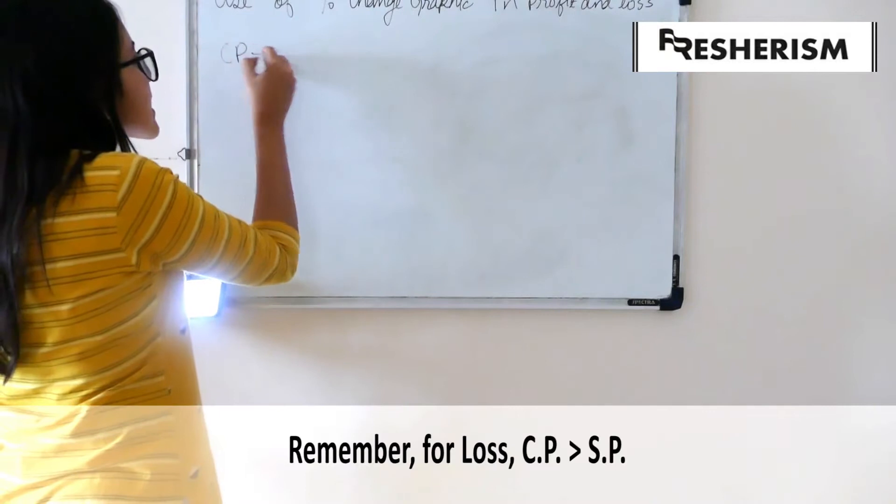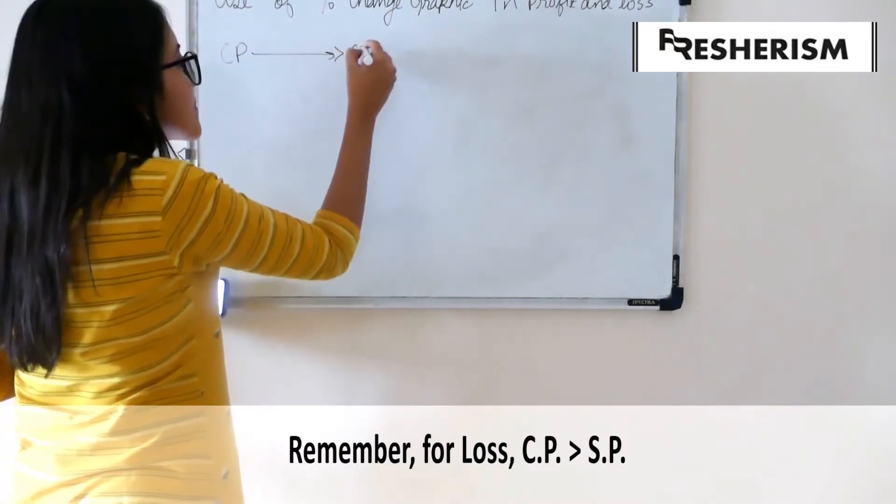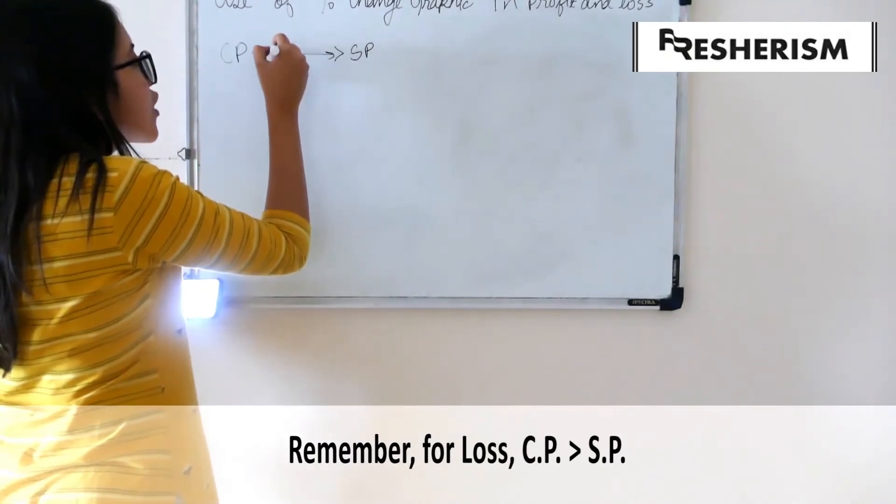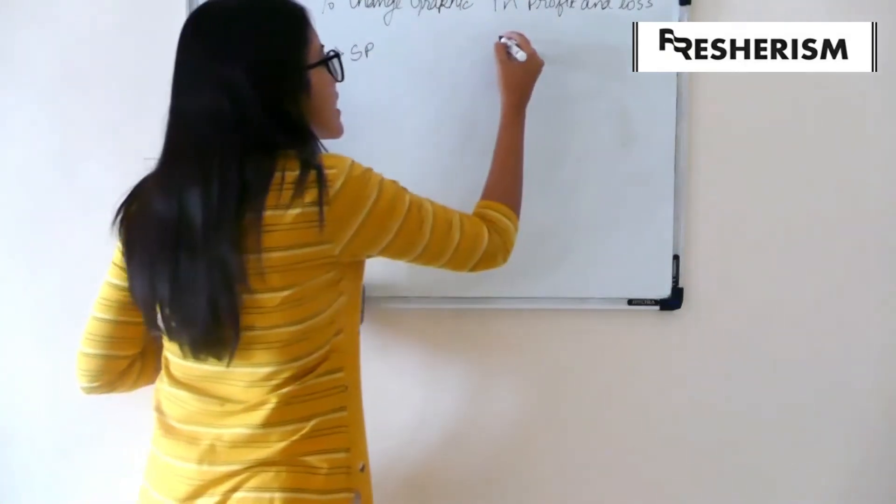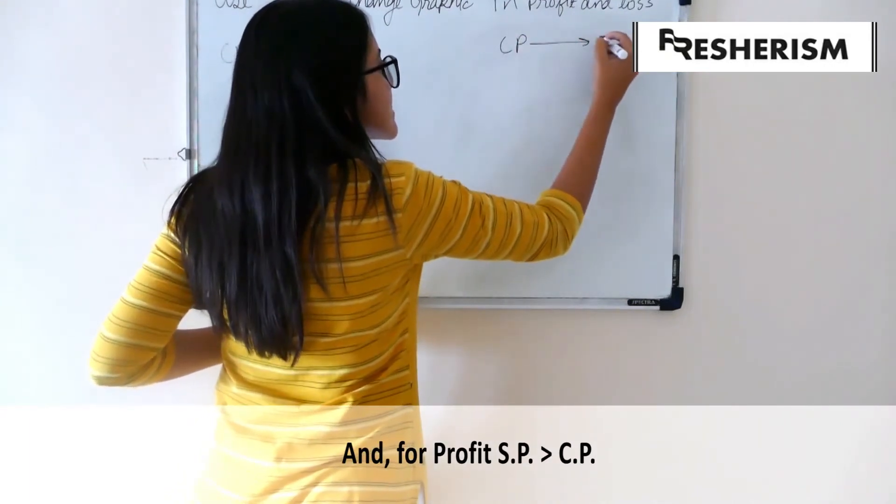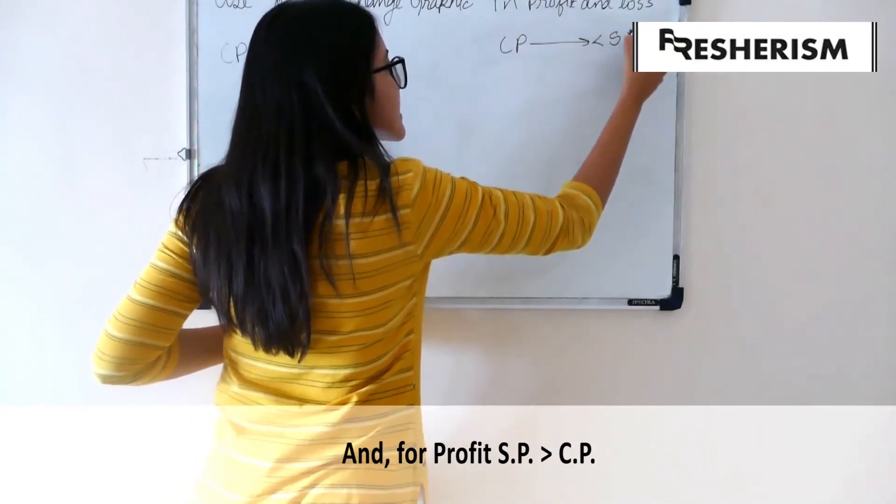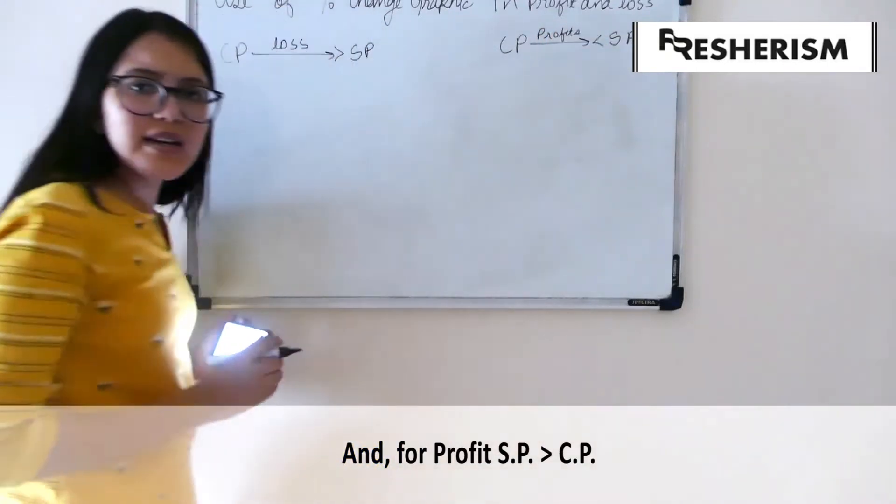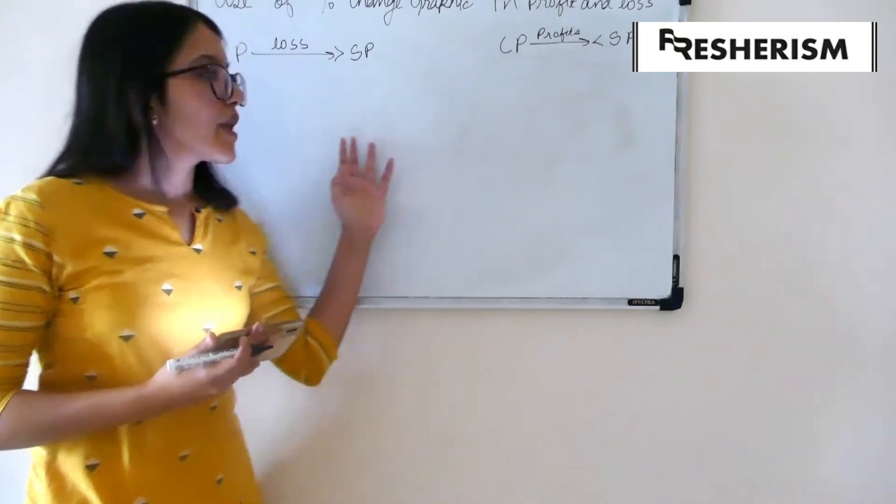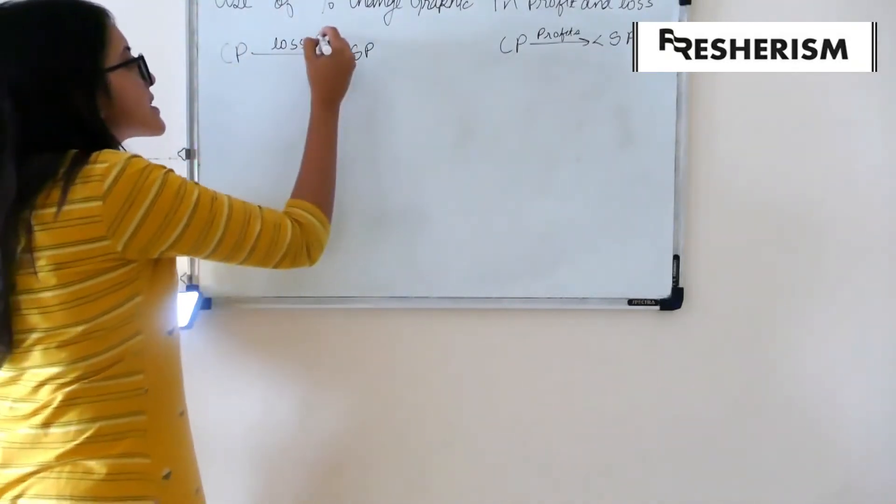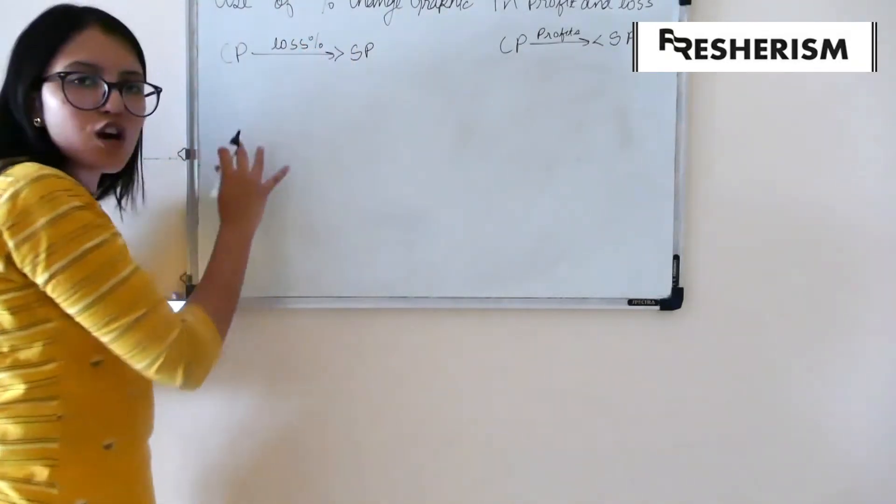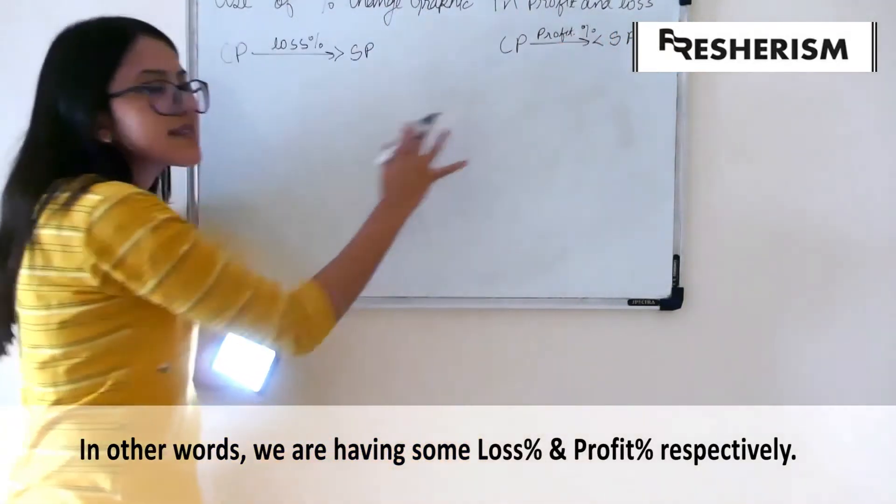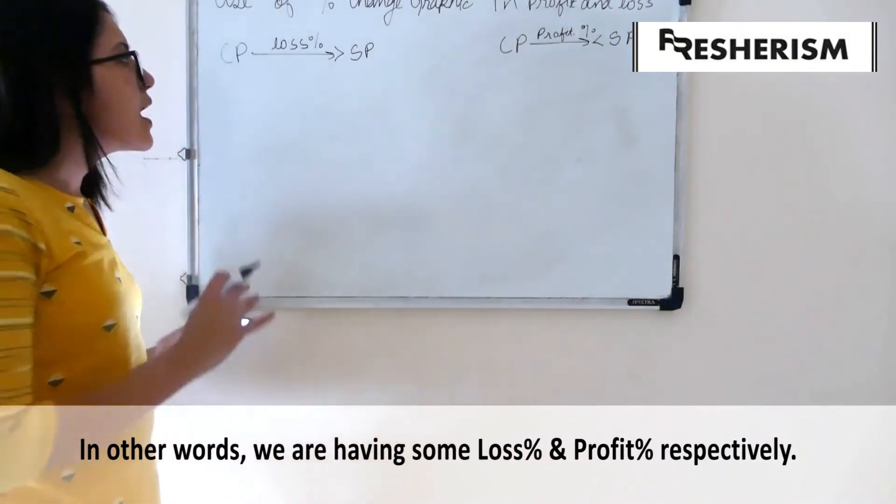If my cost price is greater than my selling price then it is obvious that I am incurring losses. And if my cost price is smaller than my selling price then I am incurring profits. This is the concept that we just studied. I can say that I will incur some loss percentage and some profit percentage in both of these cases respectively.